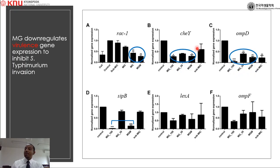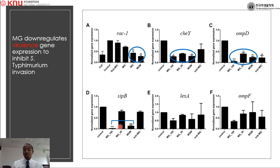Other virulence genes were also inhibited. The chemotaxis gene CHY and outer membrane protein D were inhibited by more than 70% with methyl gallate in combination with marbofloxacin. The effector protein gene SipB was suppressed by almost 80%; this gene is secreted by the type 3 secretion system of SPI-1 and is important for the trigger mechanism of cellular invasion.